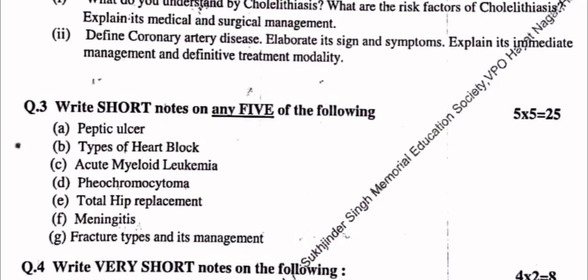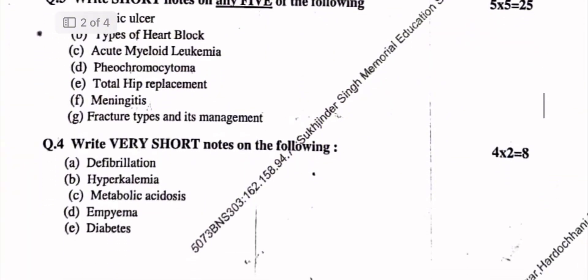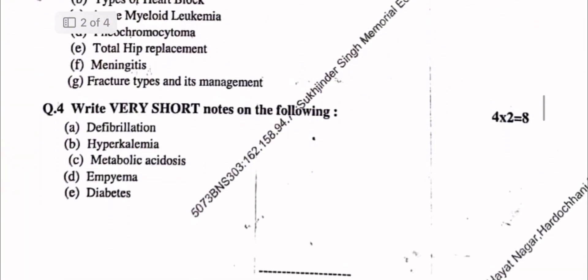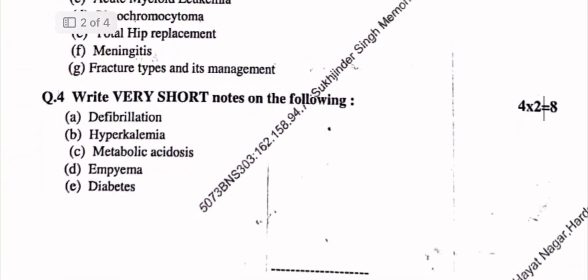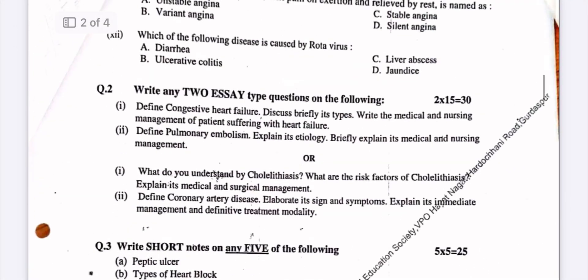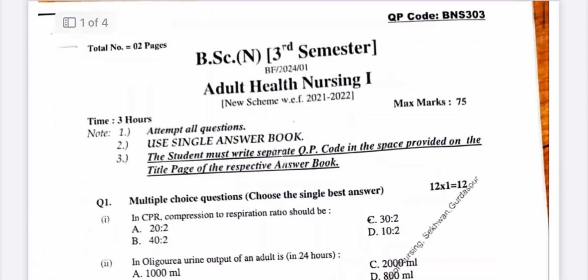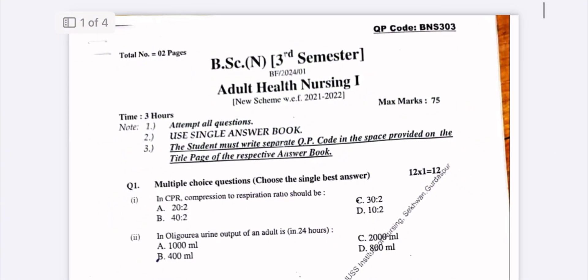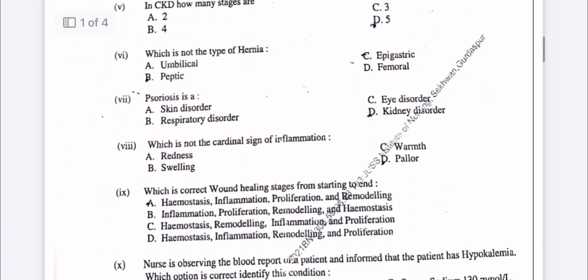Total will be 25 marks. In the fourth question, there are five very short notes, each carrying two marks, so total will be 10 marks. So this first question paper carries 75 marks in total.